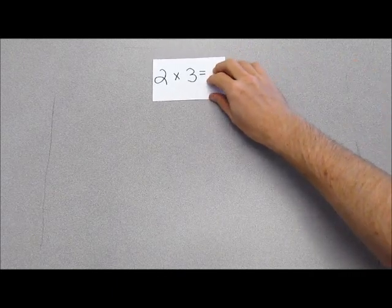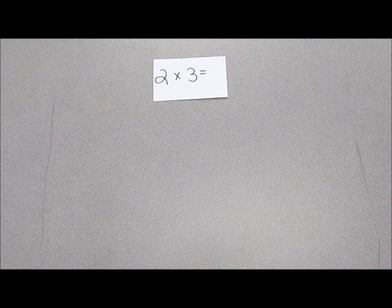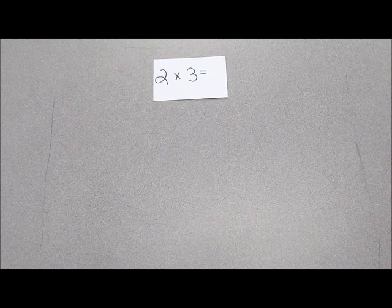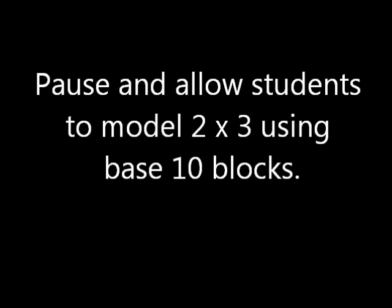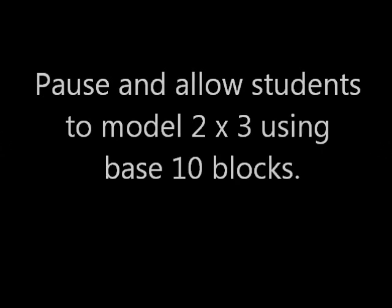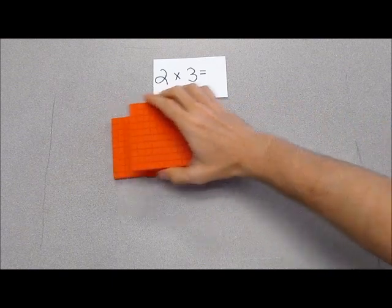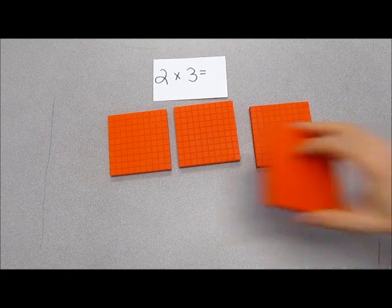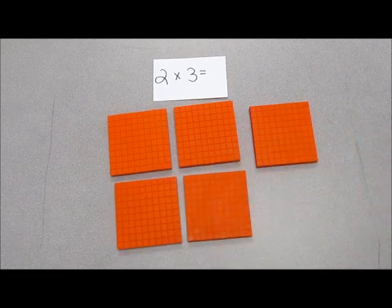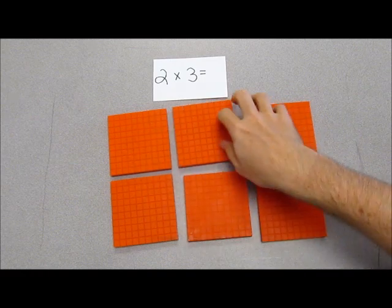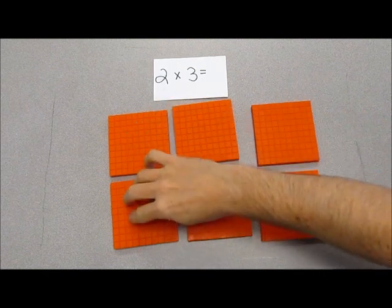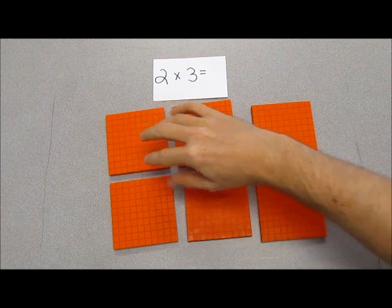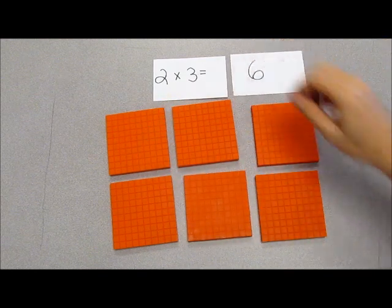Multiplication can be visualized as an array. For example, two times three, or two groups of three, can be modeled using base ten blocks, where the flat represents the whole as two groups of three. Creating the array where our flats represent our wholes, we have a base that is three whole units long and a height that is two whole units long, for an array that is six whole units.